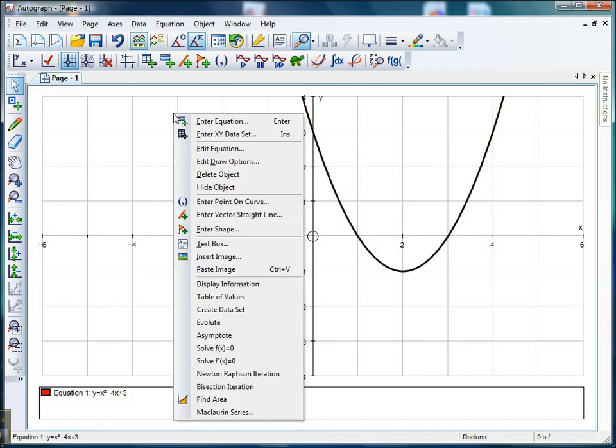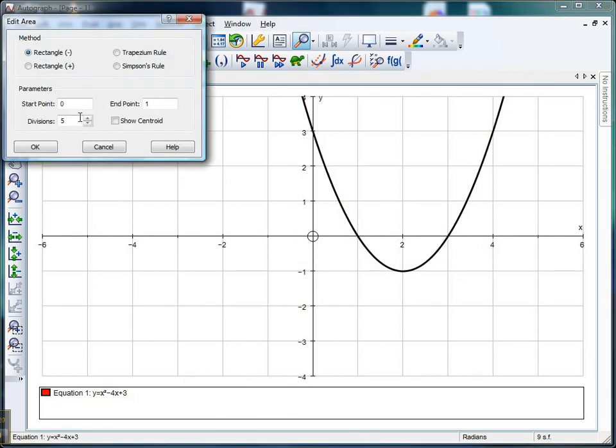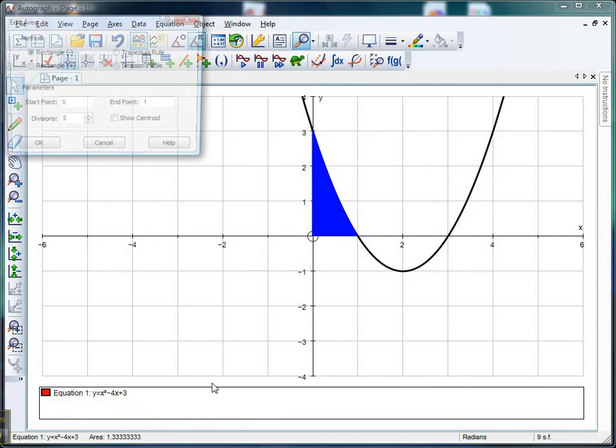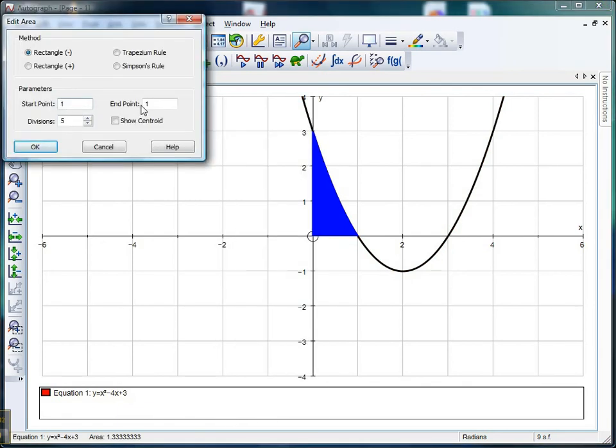Let's select the curve, right click, go find area. This time let's go from 0 to 1, Simpson's rule 200. Let's get that boxed in. Now let's select the curve again, right click, find area, and this time we'll go from 1 to 3.